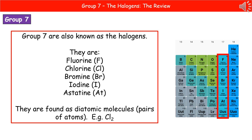On the periodic tables they give you in the exam, they'll probably have a 17 at the top, but it is still group 7. The halogens are fluorine, chlorine, bromine, iodine, and astatine.